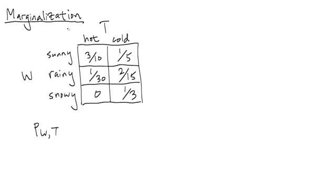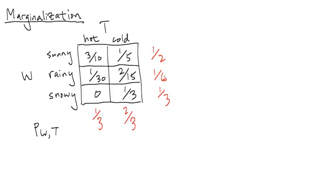If you remember in the previous video, there was a part where I summed up the probabilities for rainy and got 1/6. Well, here you can think of it as writing in the margin. I can sum up the 3/10 and 1/5 to get 1/2, and down here I'll get 1/3, and of course I can sum down the rows to get 1/3 here, and here if you add these three numbers you'll get 2/3. So now I've written in the margins these numbers in red.